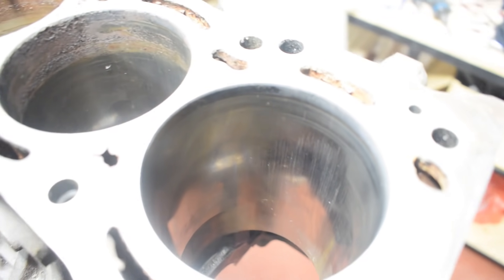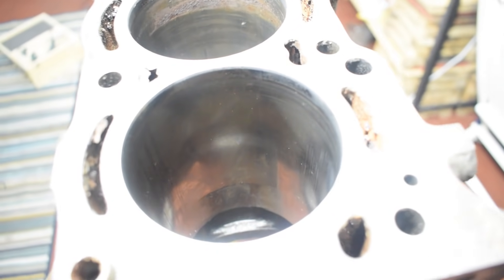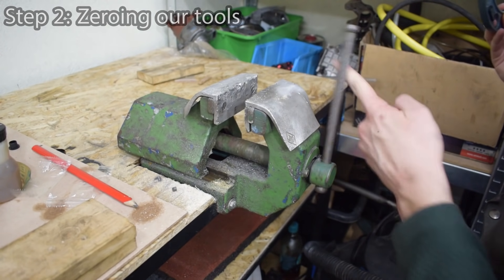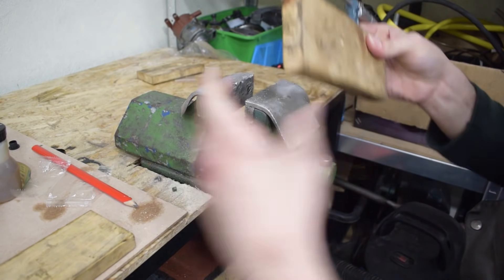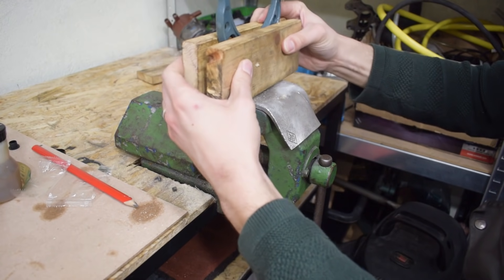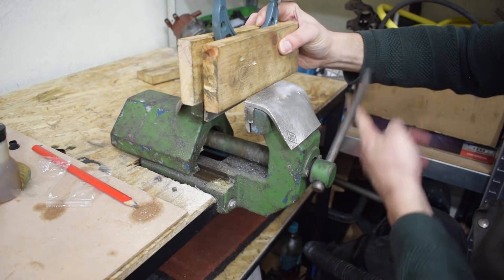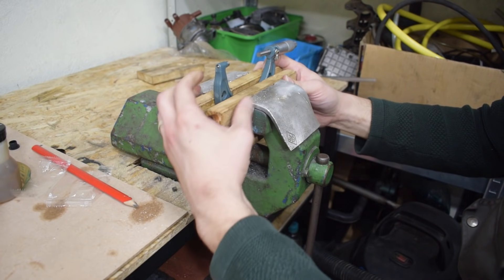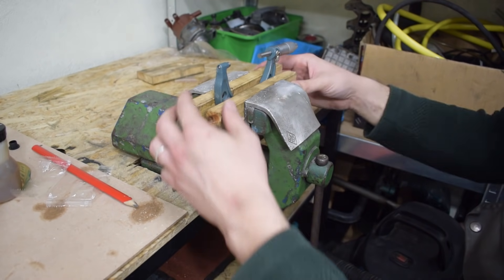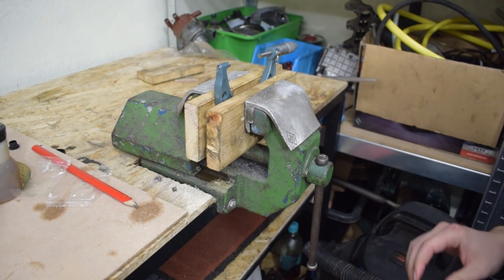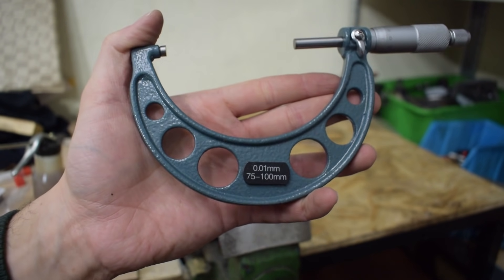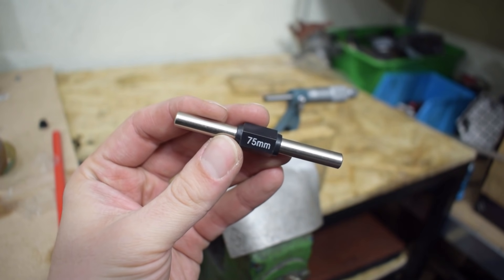To accurately measure bores we need to zero our tools. The first thing we'll zero is our micrometer and to zero it we need to set it in a vise. It's a good idea to use a soft jaw vise and or some wood and definitely do not tighten the micrometer too hard because if you do tighten it too hard you can distort its shape and if you distort its shape then it's going to be useless and it won't be able to accurately measure anything. We're using a 75 to 100 millimeter micrometer because the bore of our engine is 81 millimeters.